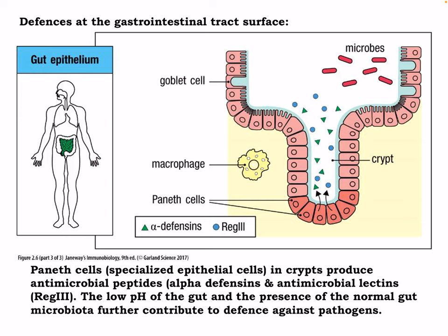The gastrointestinal tract is a huge center for immunological activity. There are whole fields dedicated to mucosa-associated lymphoid tissue, or MALT. We have Paneth cells, which are specialized epithelial cells in the crypts that produce antimicrobial peptides, including alpha-defensins and antimicrobial lectins including REG3. The low pH of the gut and the presence of normal gut microbiota further contribute to defense against pathogens.